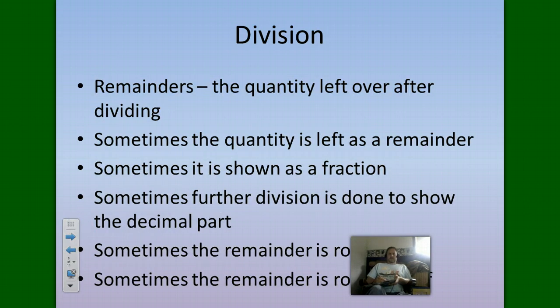The remainder is the quantity that's left over after dividing. Sometimes we just leave it that way, R4 so we had a remainder of 4, or R17 we had a remainder of 17. Sometimes we show it as a fraction, like if I had three left over and I was dividing by five, my fraction would be three-fifths. Out of five parts I have three left over.